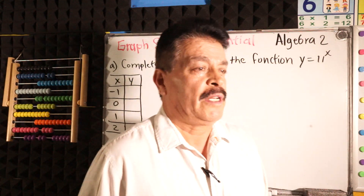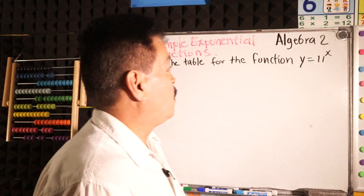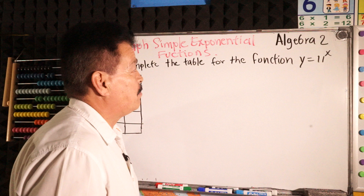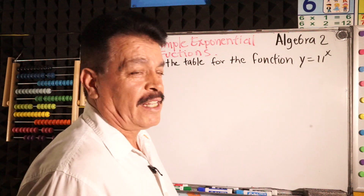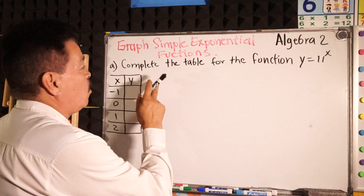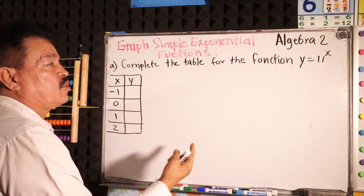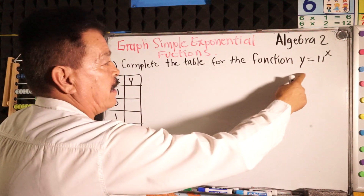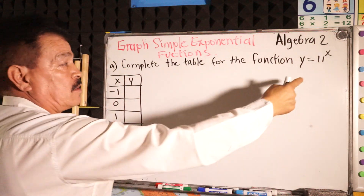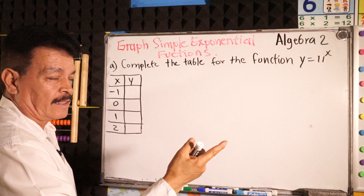Algebra 2, welcome. I have this problem for today: graph a simple exponential function. Complete the table for the function y equals 11 to the x.